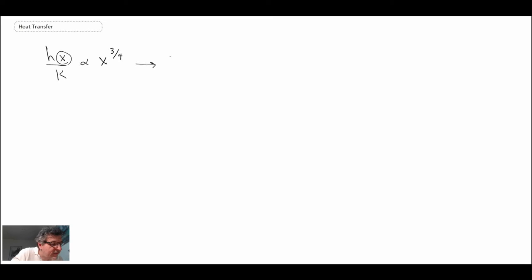If I want to isolate for h, that means h is going to be a function of k, but k is a constant, so it would be over x to the one-quarter, or x to the minus one-quarter. And so with that, we're looking at h of x.